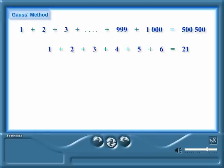Earlier, you added these six consecutive natural numbers, starting from 1. Gauss saw that you could pair the first and last number, and that this added up to 7.